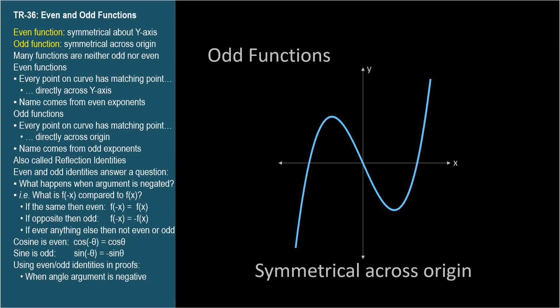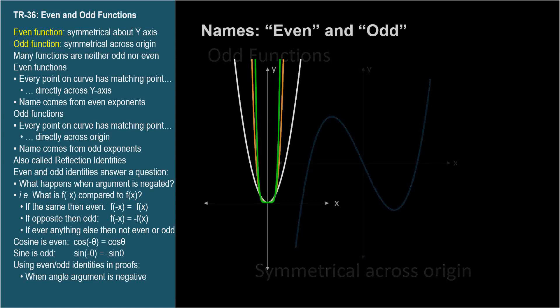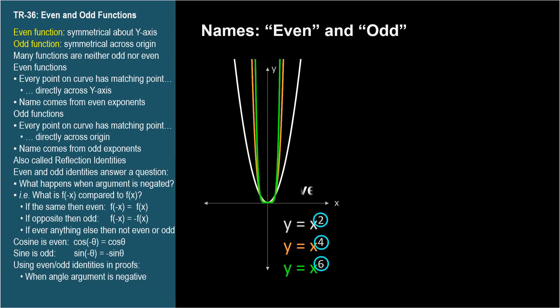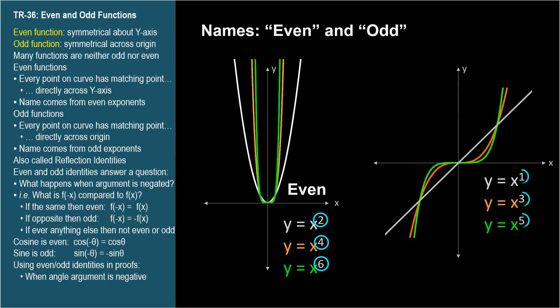The words even and odd come from the one-term exponential functions that generate the characteristic when graphed. Even exponents yield even functions, and odd exponents yield odd functions.